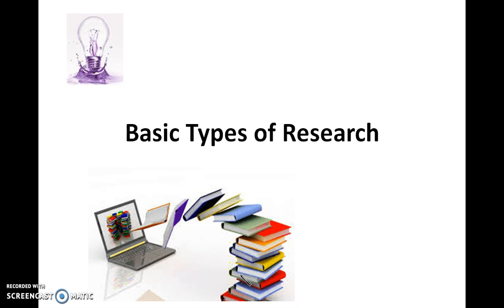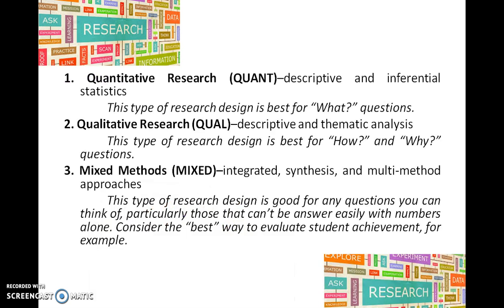Next, we are going to see the basic types of research. There are three types: quantitative research, qualitative research, and a mix of both. Quantitative research uses descriptive and inferential statistics and is best suitable for 'what type' questions. Qualitative research uses descriptive and thematic analysis, which is best for 'how' and 'why' questions. For any effective education research, we can adapt mixed methods, since this type of research is good for any questions you can think of — particularly those that can't be answered easily with numbers alone.